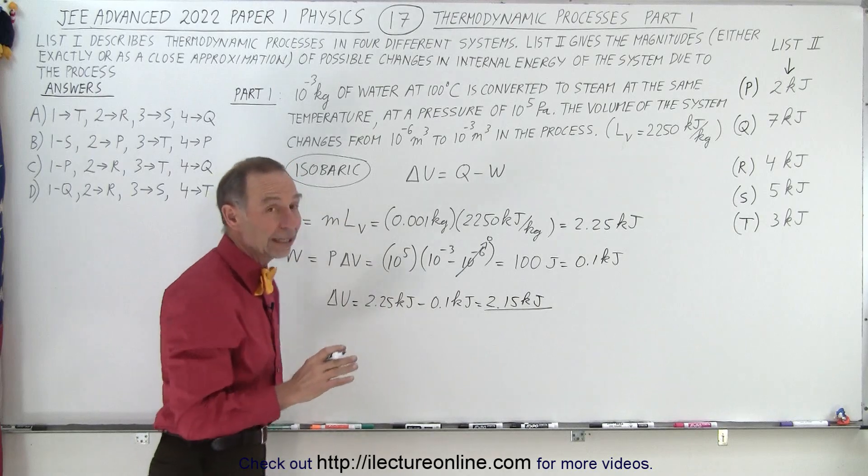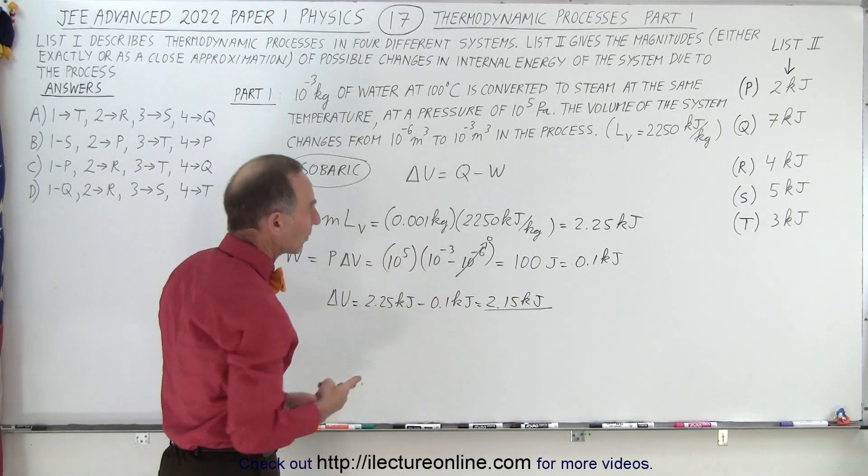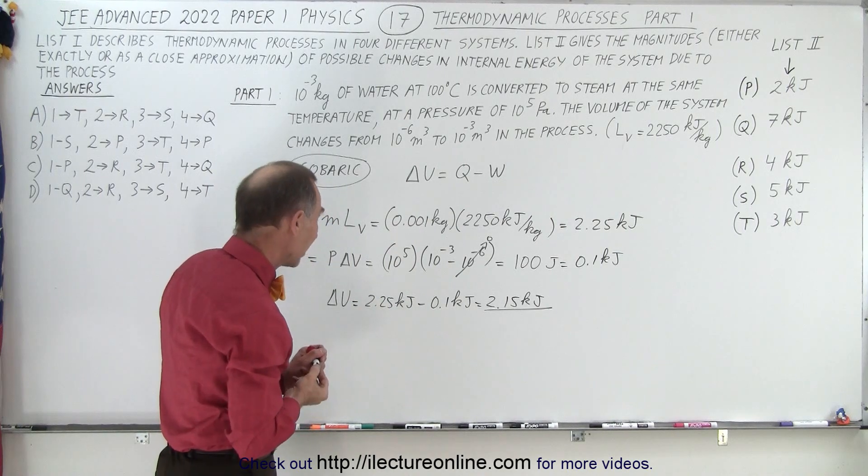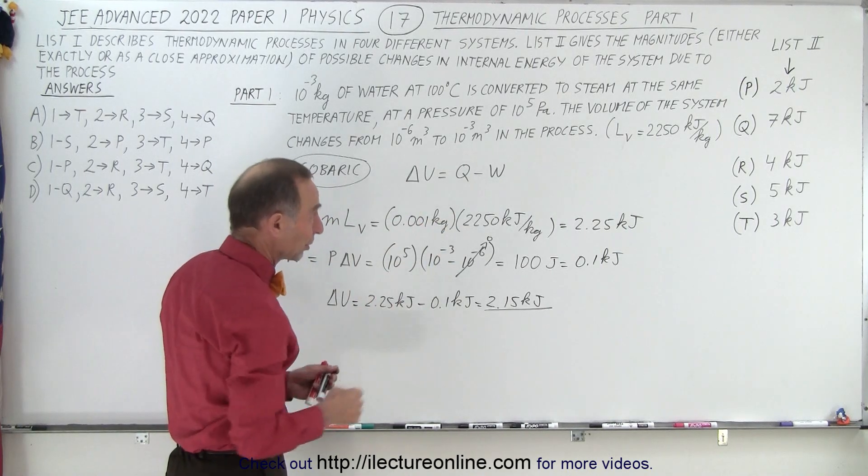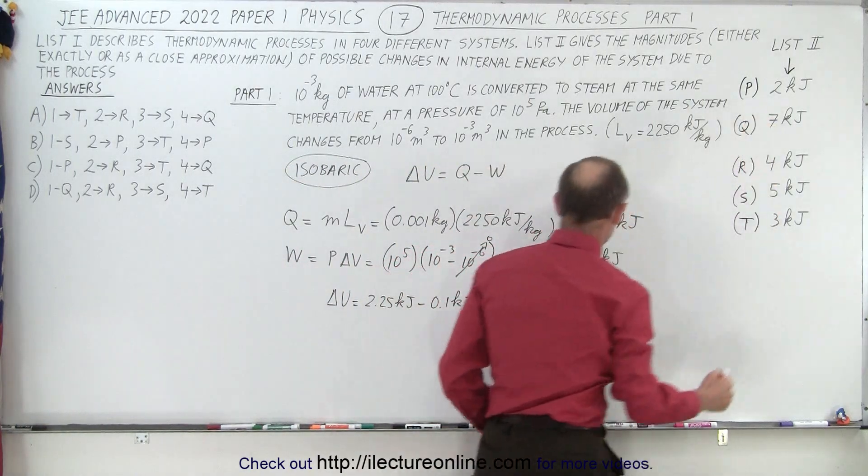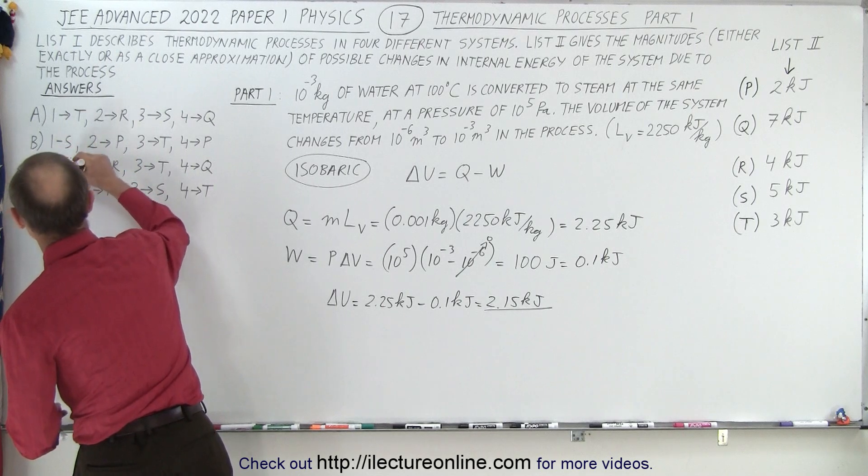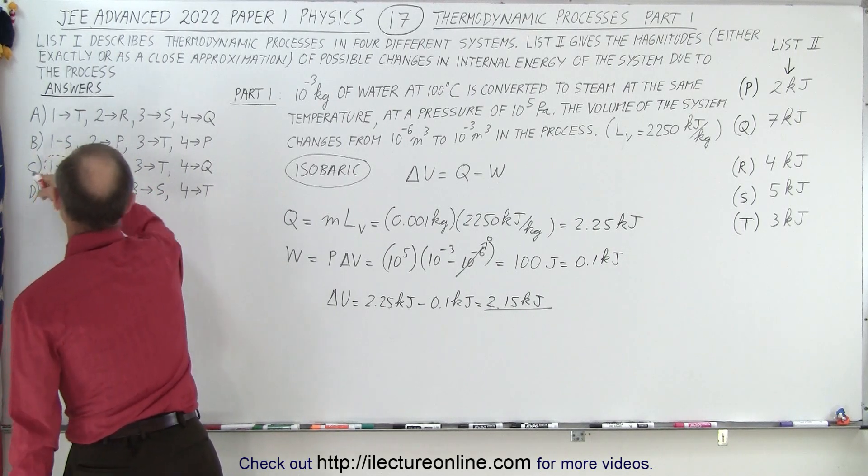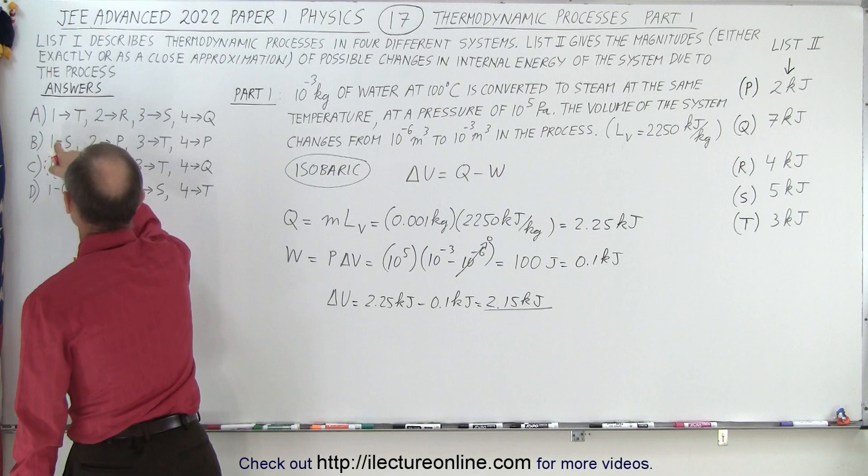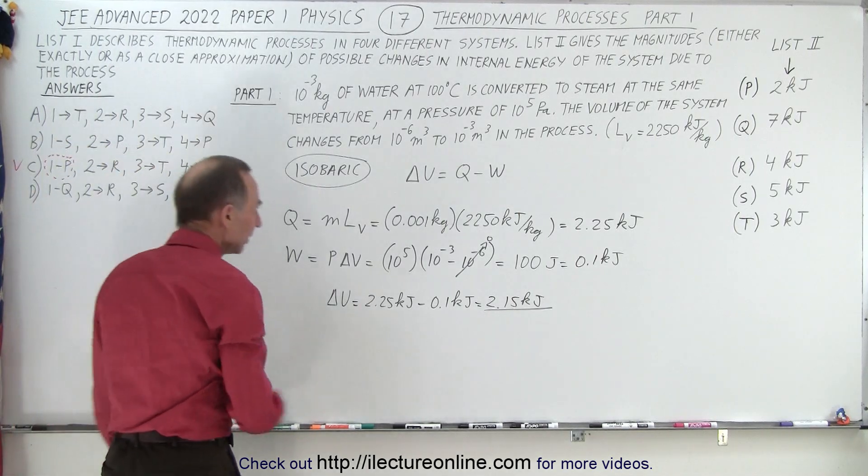Now, they did tell us we get either the exact answer or an approximate answer. In this case, 2.15 is pretty close to 2, so P is the answer. Since that's the only option, the answer here would be C, because the other ones give you a different answer.